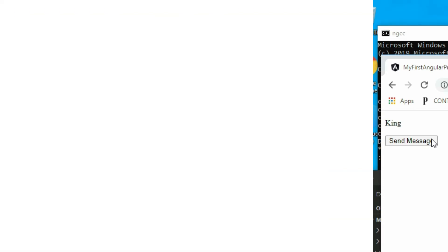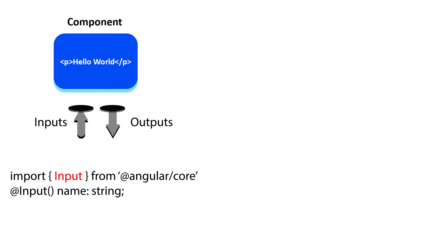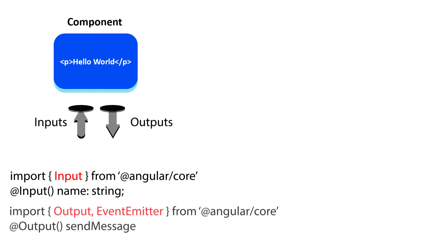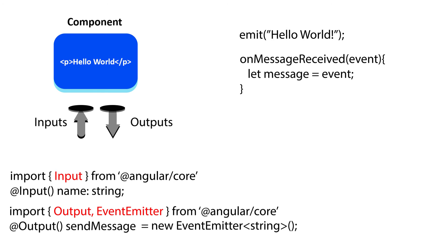Let's take a moment to recap what we have learned. We learned that we can add inputs and outputs to our components. We use inputs to insert values into our components and outputs to get values out from the component. We learned how to add inputs and outputs to our components. To add inputs, we need to add Input to our imports and then add the input decorator to the input receiver variable. To add outputs, we need to add Output and EventEmitter to our imports and then add the output decorator to our output variable. Then we have to initialize the output variable with an EventEmitter object. We learned that outputs are really events and that they can be triggered by calling the emit method. We learned that events return an event object that contains information about the event. We can use the event object that's returned to us and get the value that was passed in the emit method.